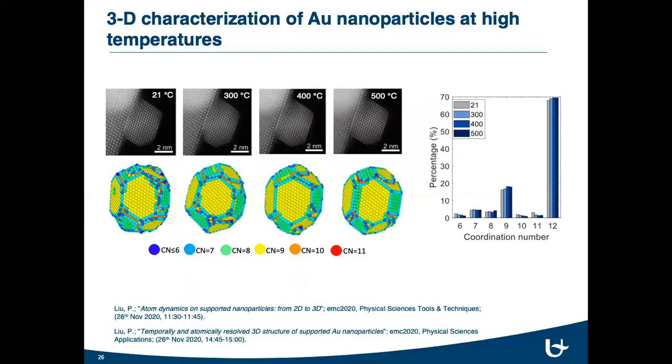So, three-dimensional structures of the gold nanoparticle is obtained at different temperatures. Further results about structural changes of the supported gold nanoparticle under heating environment will be explained in detail by Pey-Liu tomorrow.